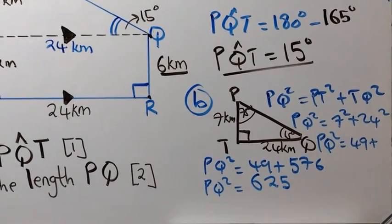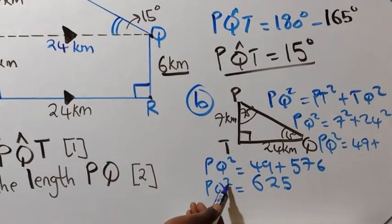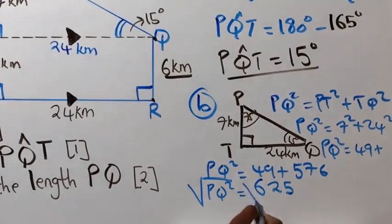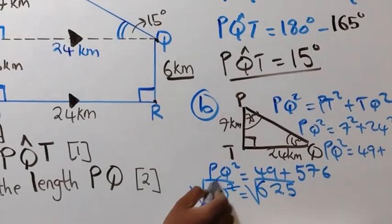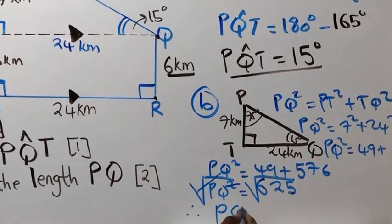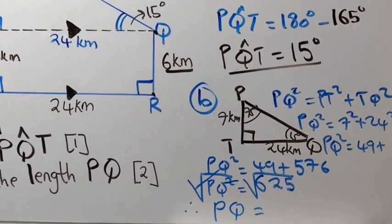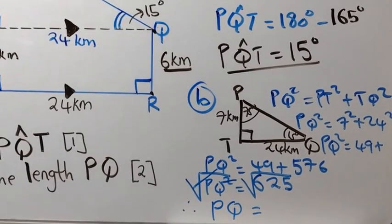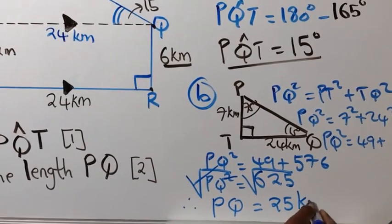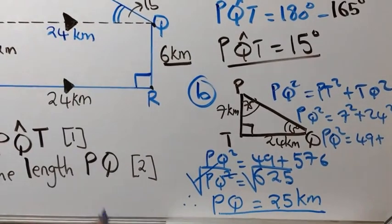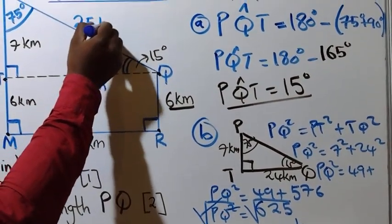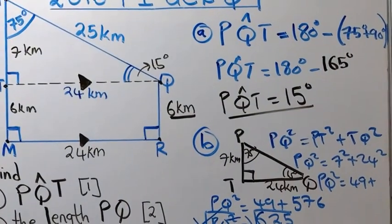Since PQ is squared, we get rid of the square by taking the square root of both sides. Therefore PQ equals the square root of 625, which gives a positive value of 25. So the length of PQ is 25 kilometers. That answers question (b).